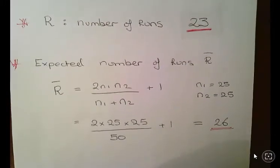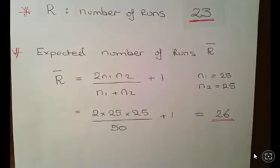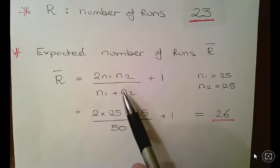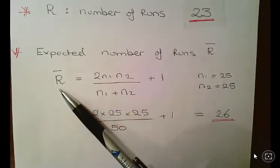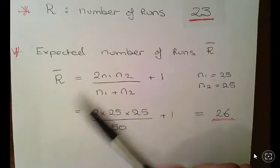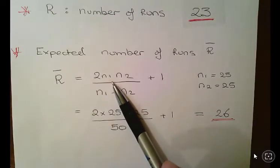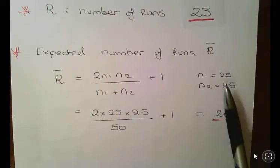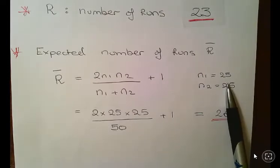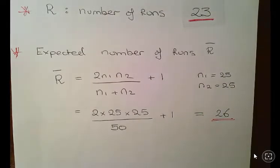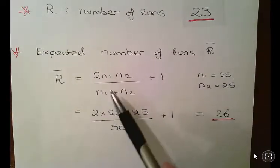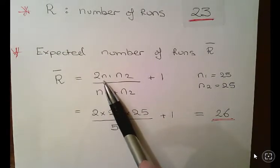So The Expected Number of Runs. Those are two calculations we have to make. Essentially they're equivalent of the mean and the standard deviation. This is probably a formula that's going to be given to you in the back of the exam paper. But the expected number of runs R bar is equal to 2N1 which is the sample size of one group, so that's just arbitrary, we both have 25 and 25.